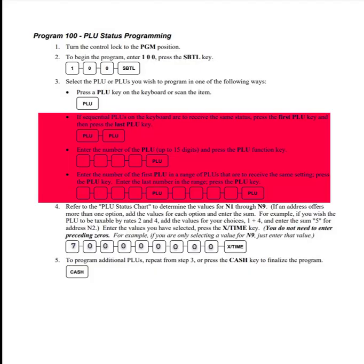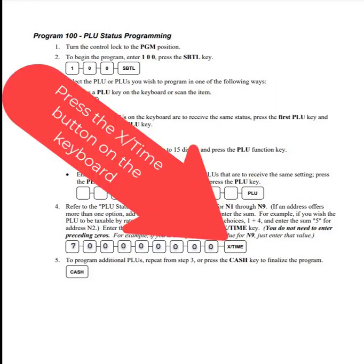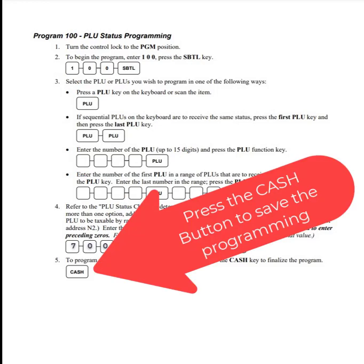You can ignore those other steps there — those are useful for programming lots of PLUs but let's just skip it for now. Then we're going to enter the code that we developed, which was 7 followed by eight 0s — just enter that on the keypad. Then press the X/Time button. After that, press the Cash button. That will finalize and save the program, and we're done programming the status, or the personality, of that particular PLU.